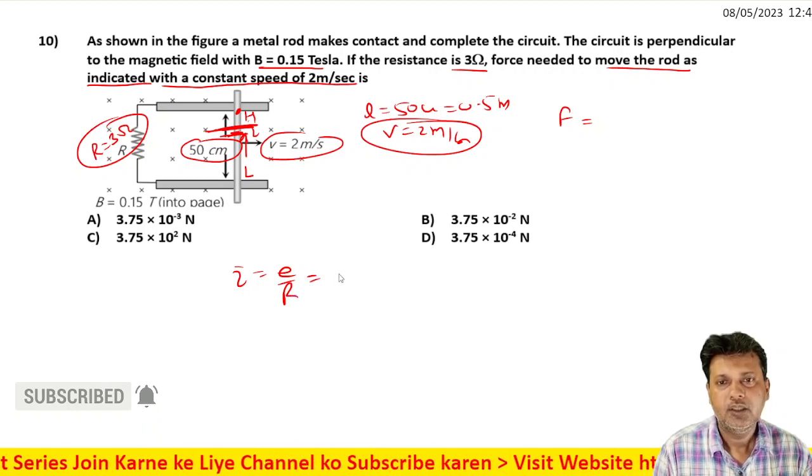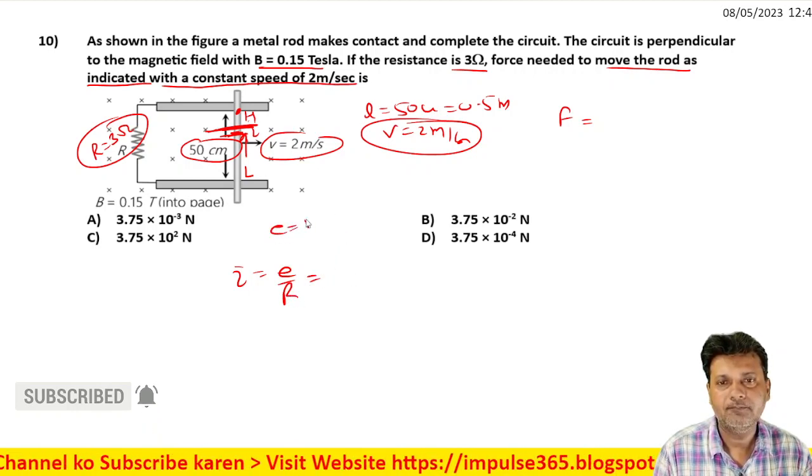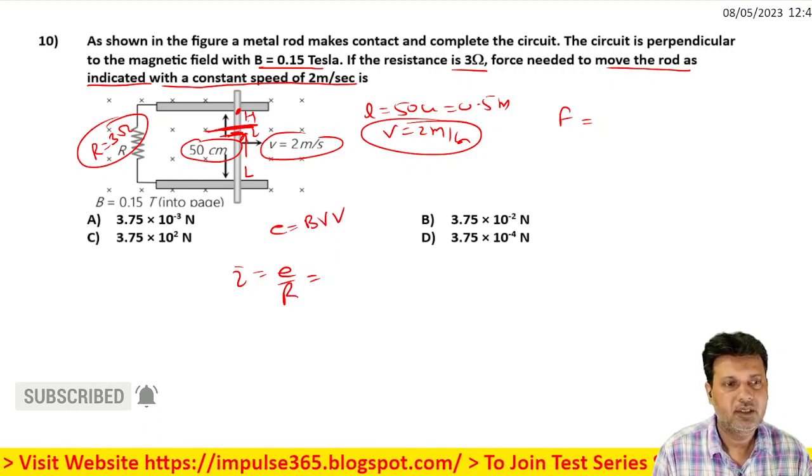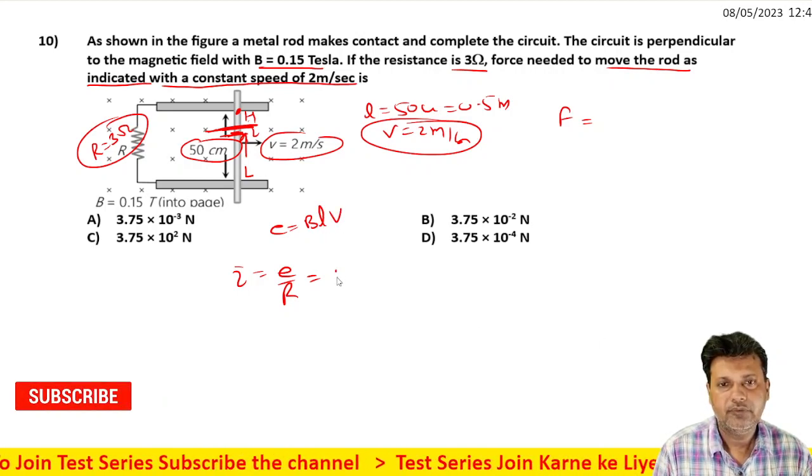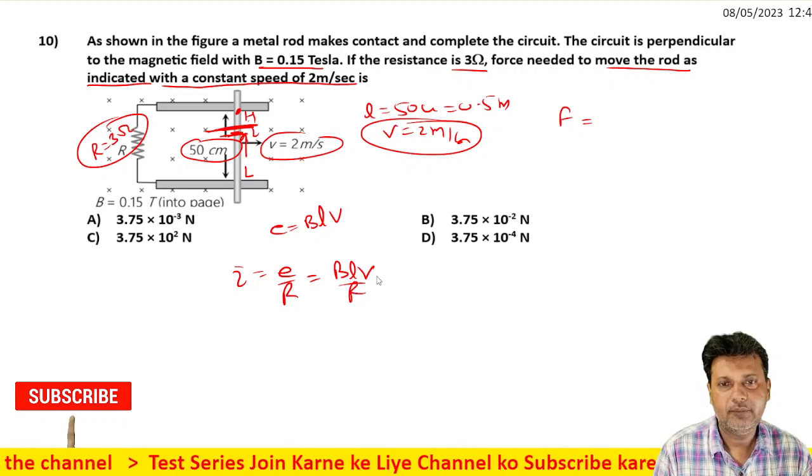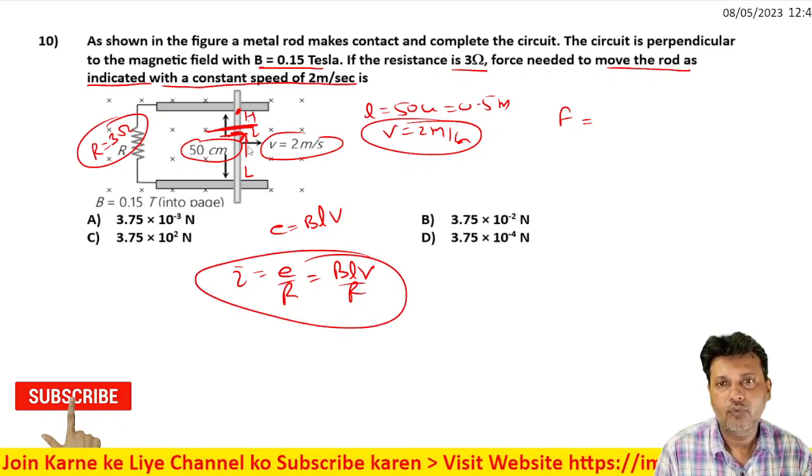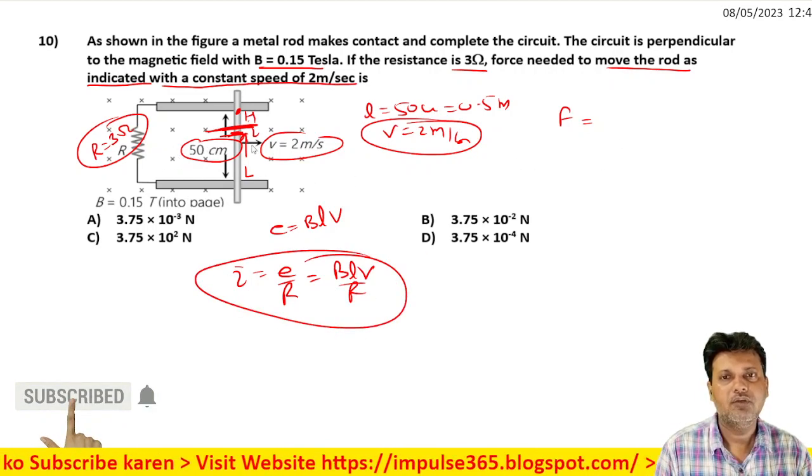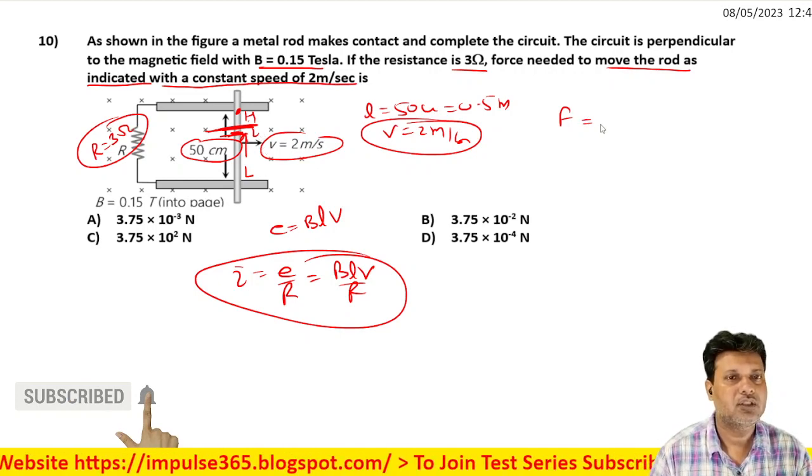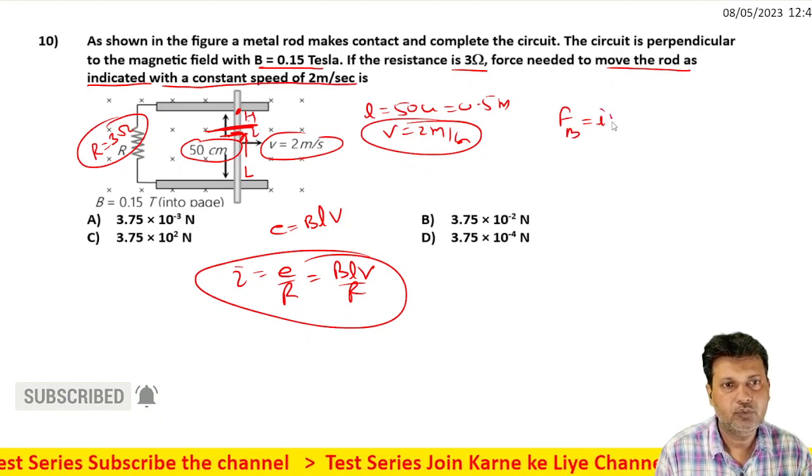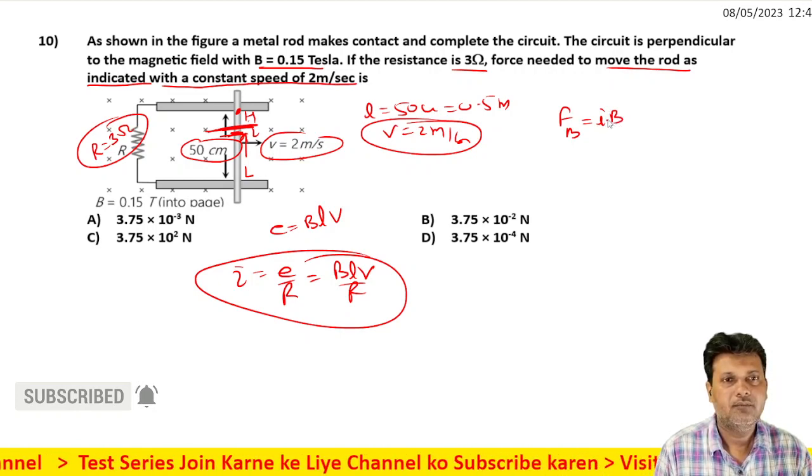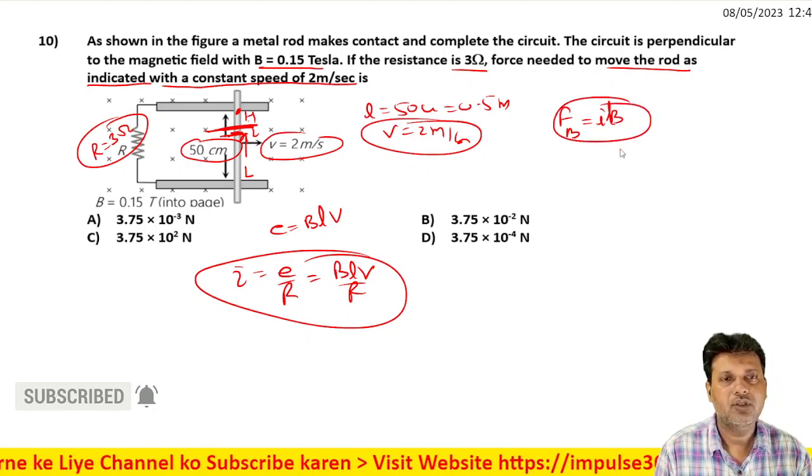The EMF value is equal to B L V. The current value and force - when the rod moves, the magnetic force value is I L B. The magnetic force is I L B.